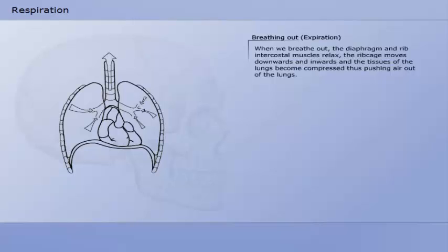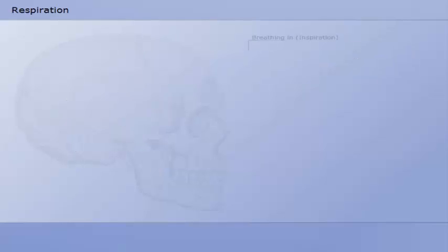When we breathe out, the diaphragm and rib intercostal muscles relax. The ribcage moves downwards and inwards, and the tissues of the lungs become compressed, thus pushing air out of the lungs.